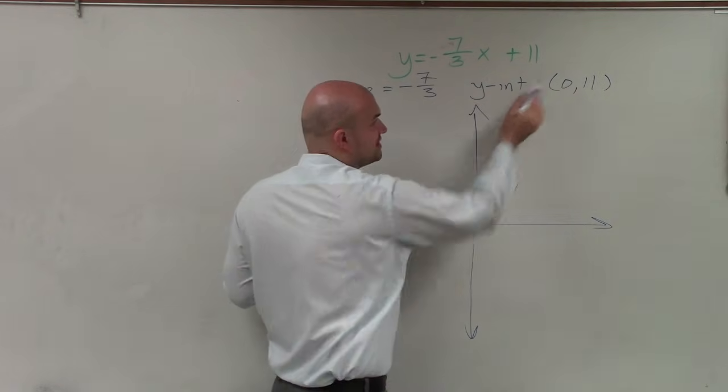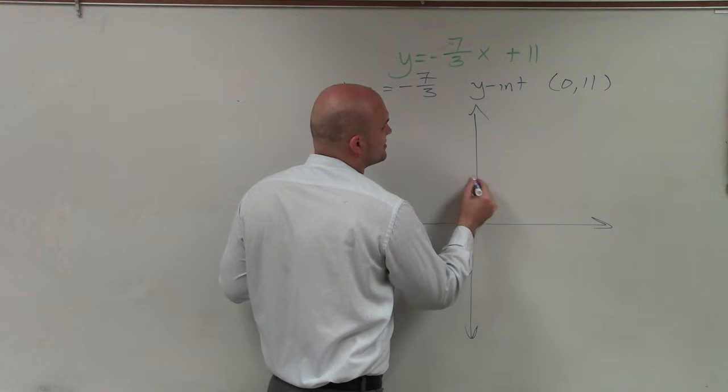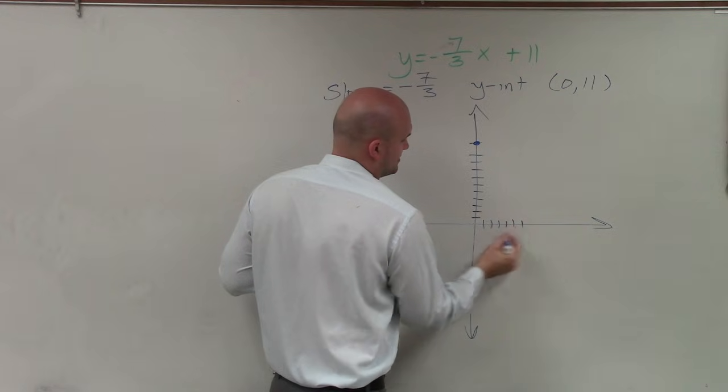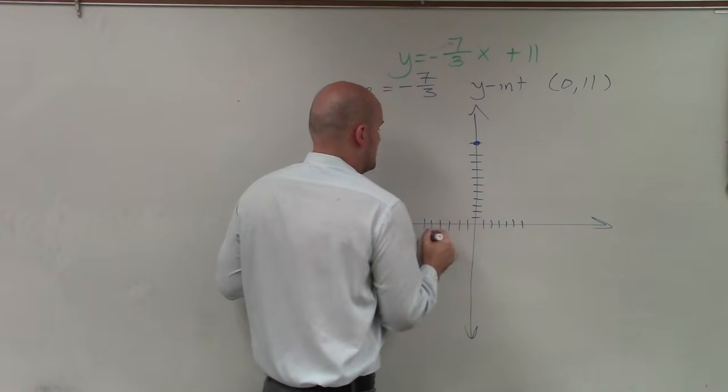And then I'll go to the point 0 comma 11. 1, 2, 3, 4, 5, 6, 7, 8, 9, 10, 11. All right? 1, 2, 3, 4, 5, 6, 1, 2, 3. OK.